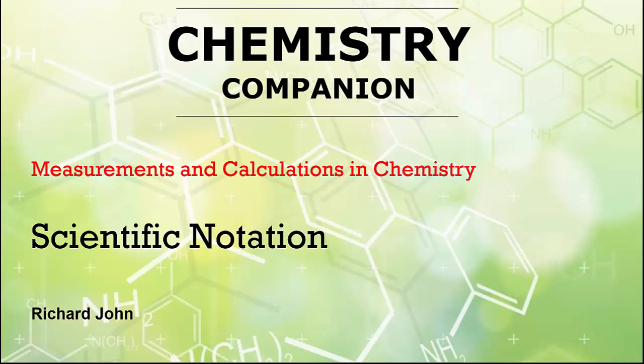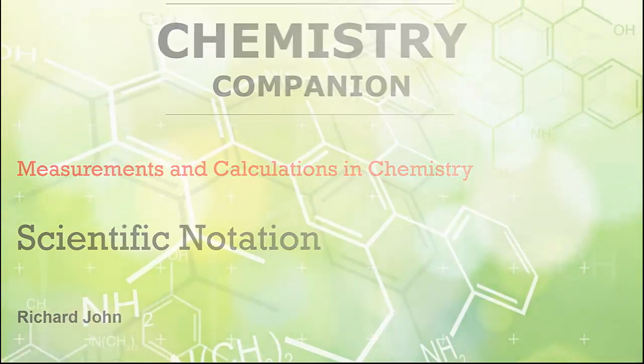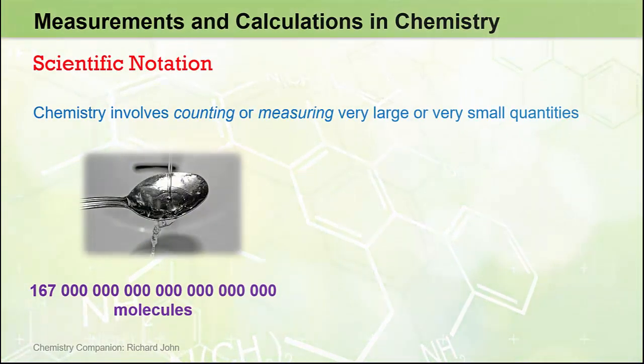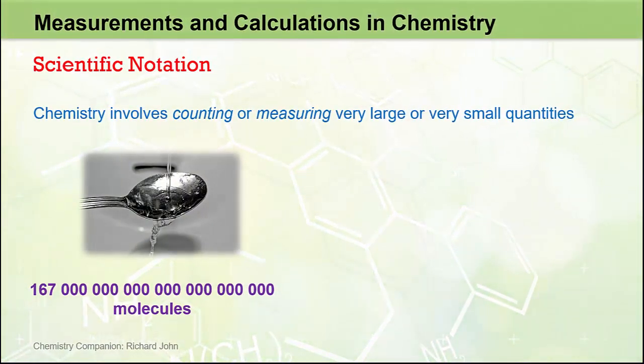When carrying out measurements or performing calculations in chemistry, we often encounter very, very large numbers or quantities, or very, very small numbers or quantities. The use of scientific notation is a useful way to help us deal with these very large or very small numbers. Chemistry often involves counting or measuring very large or very small quantities.